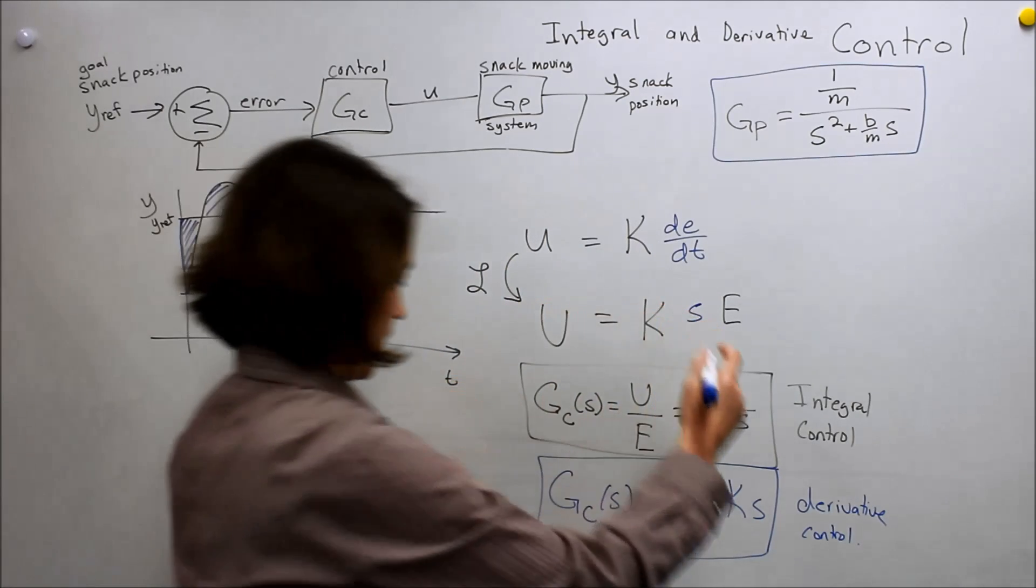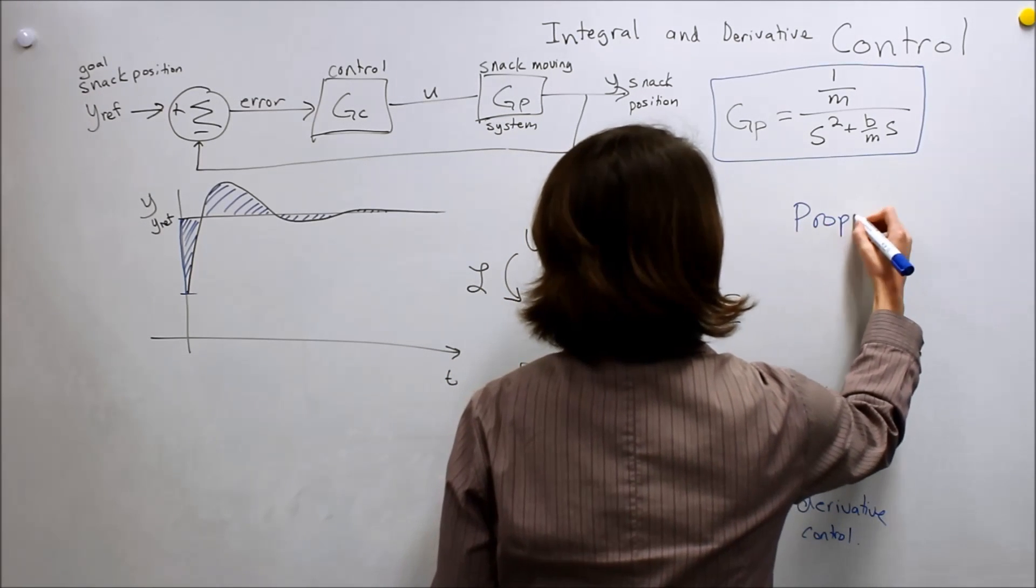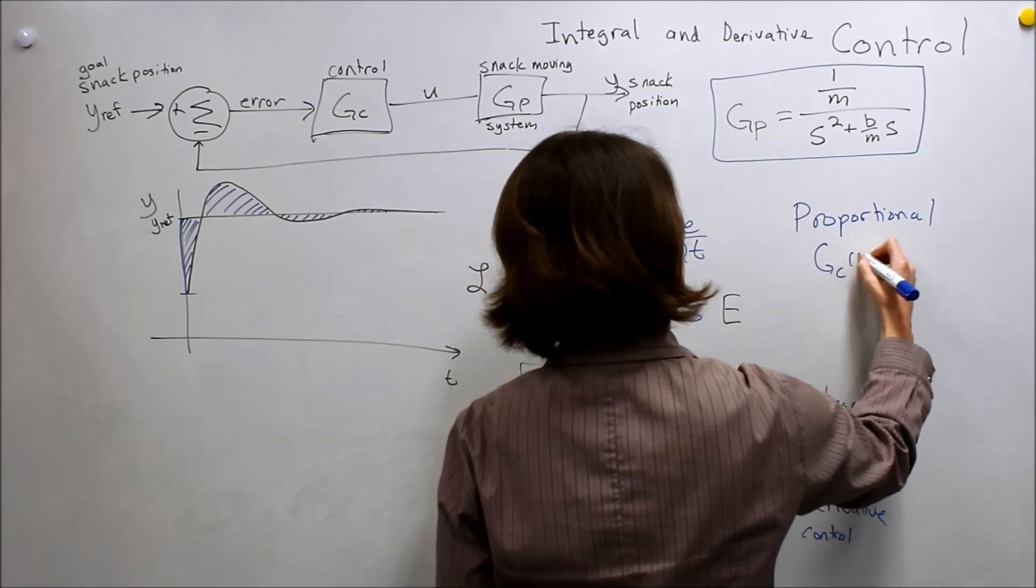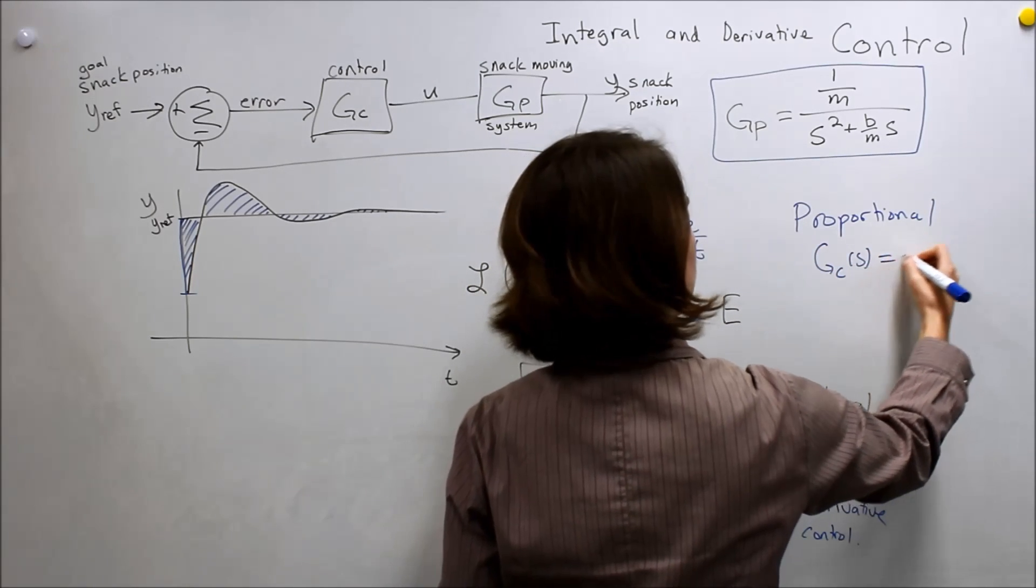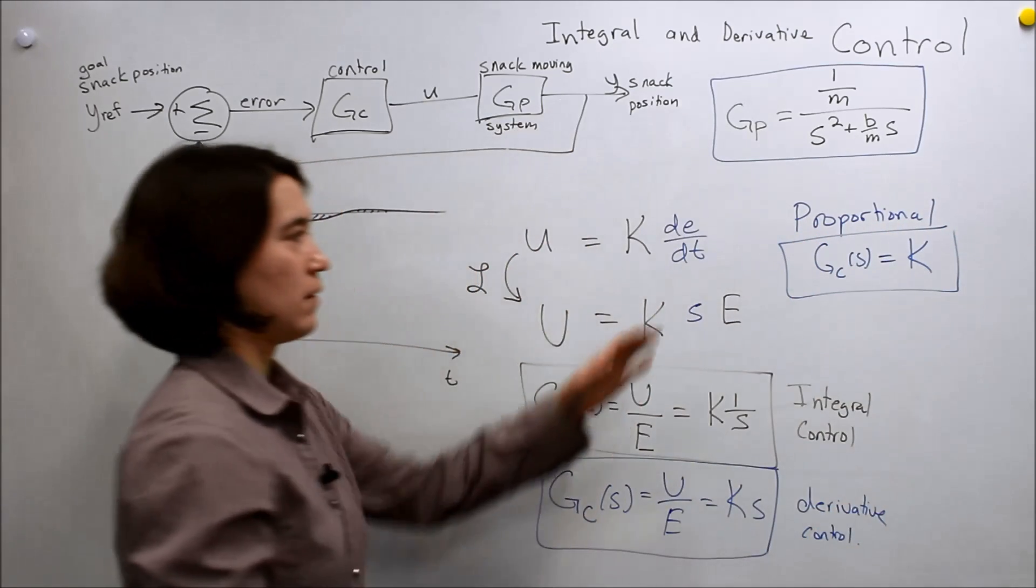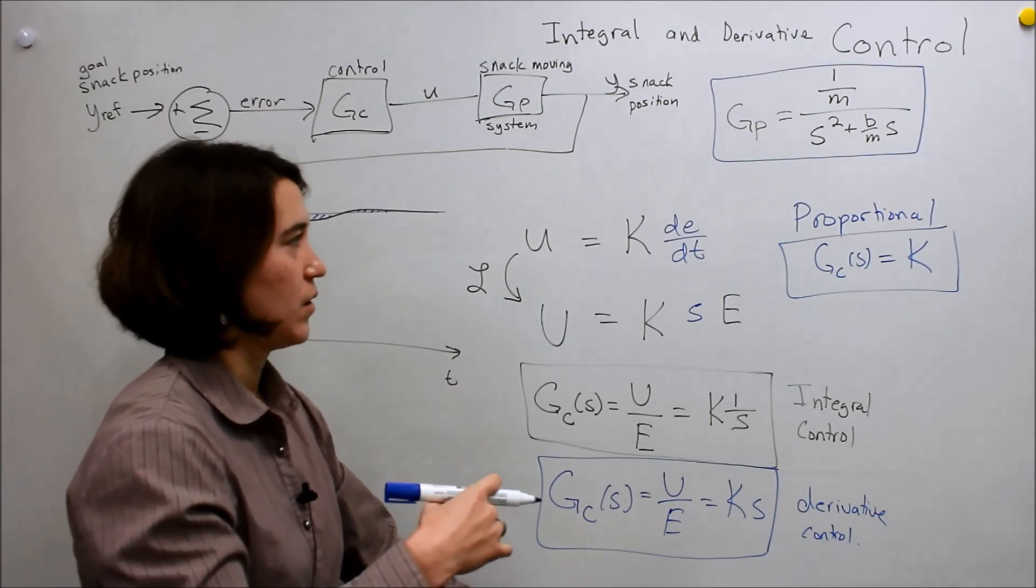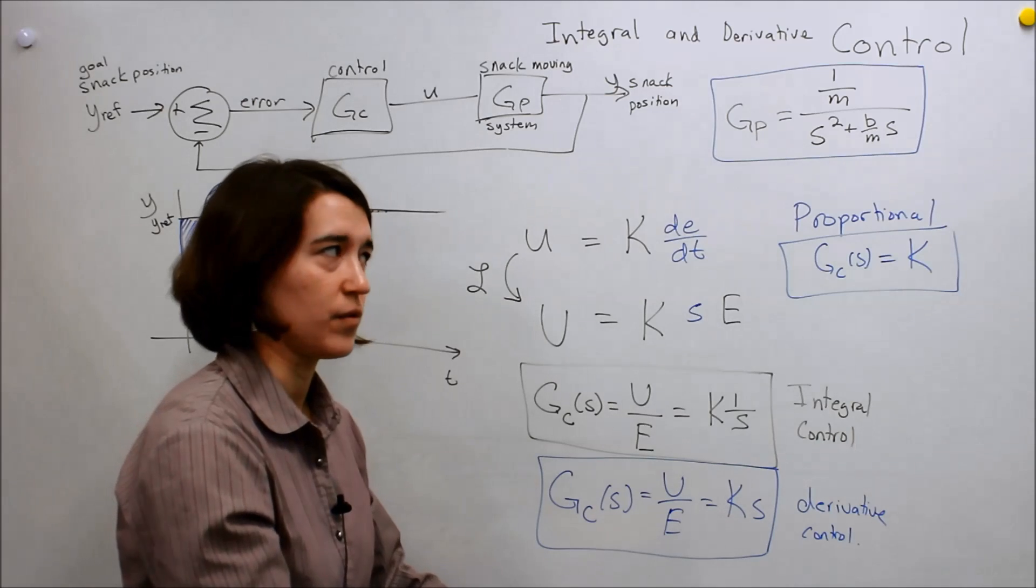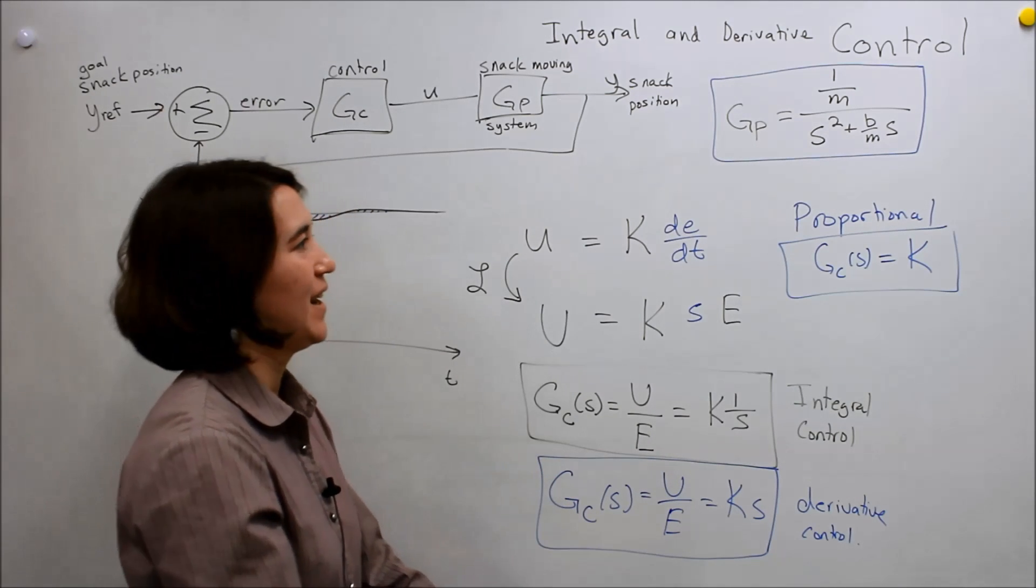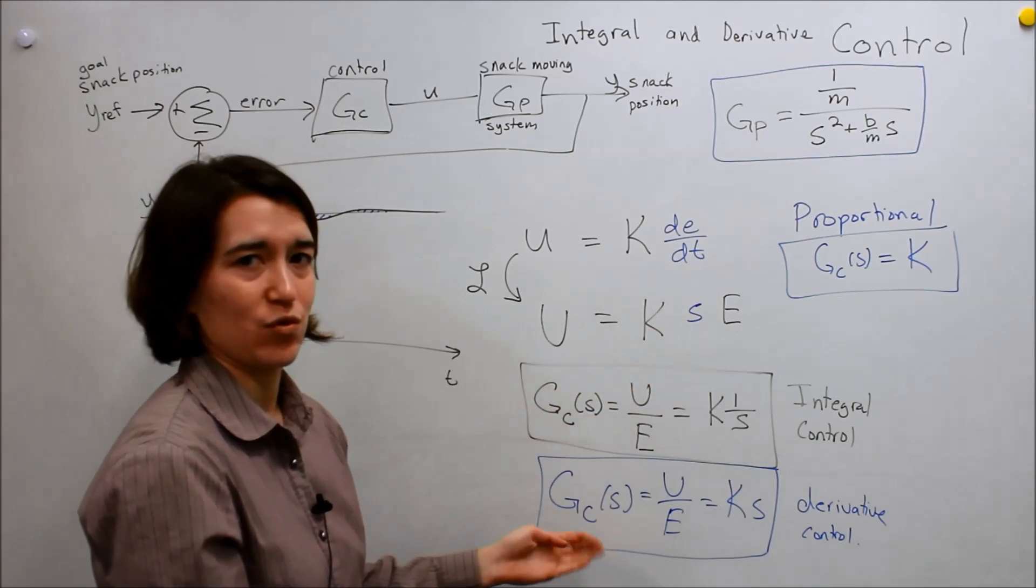And I'll just write it up for good measure, so when we do the proportional, that was Gc(s) equals just K. So here are our three different expressions. And one common form of control is called PID, or PI, or PD.